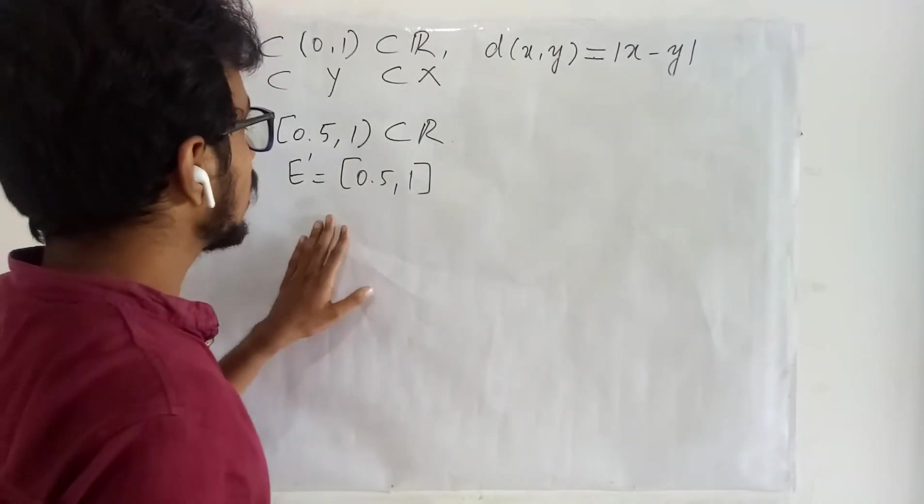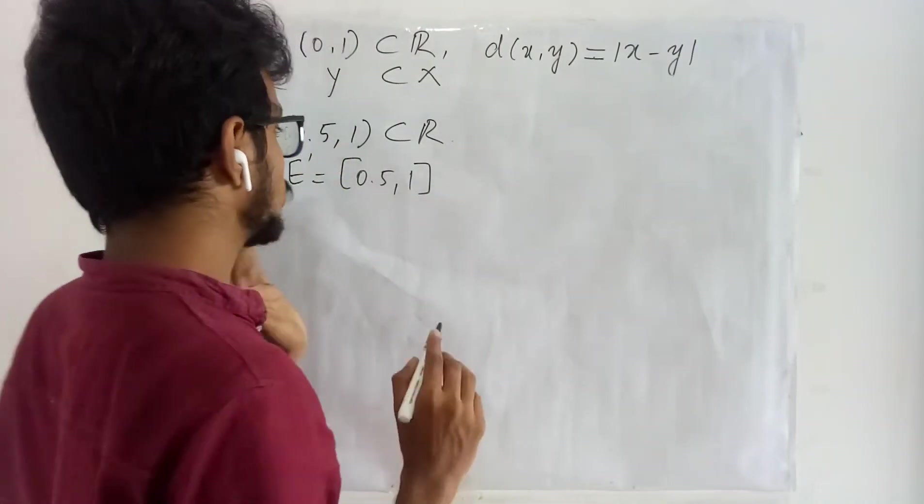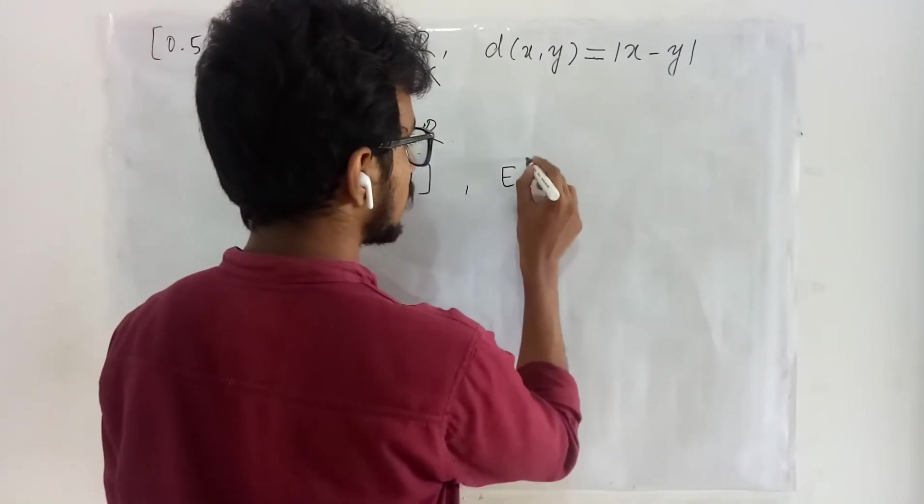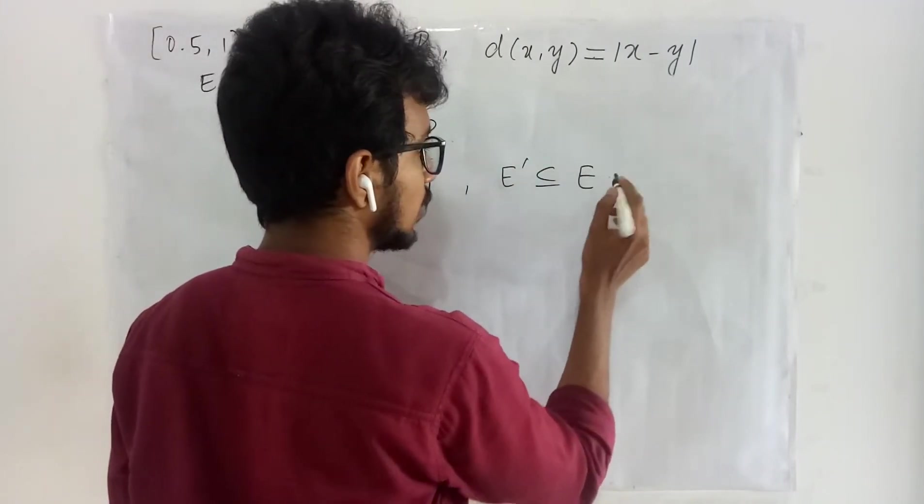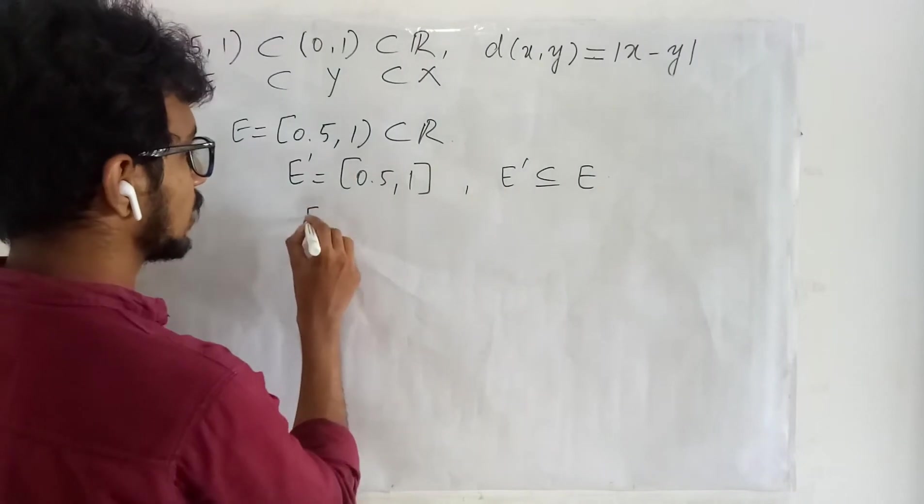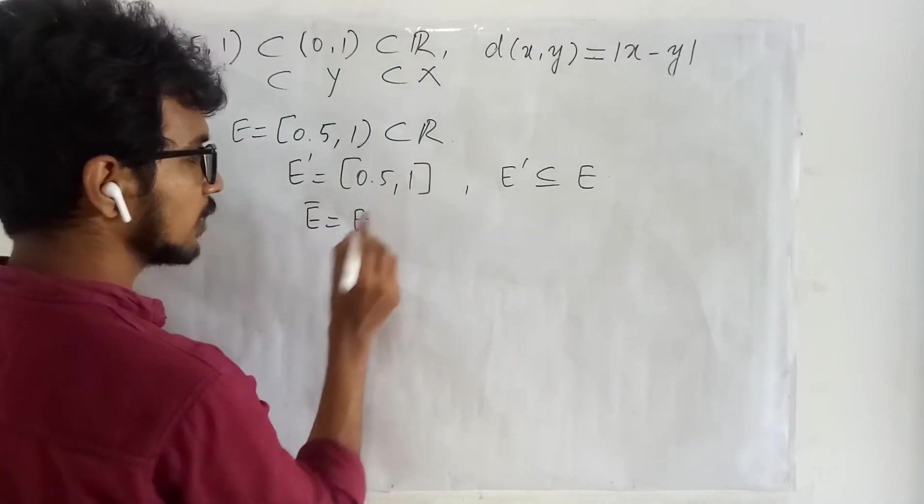So in order to say a set is closed what should we say? We should say the collection of limit points is contained in E itself, or we may also say that E closure is same as that of E.